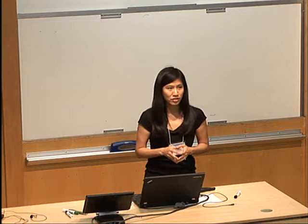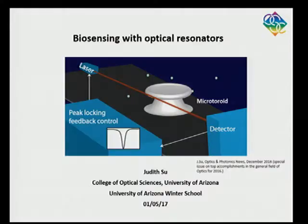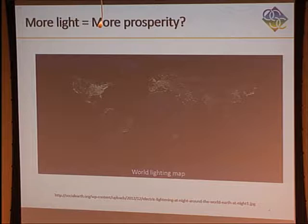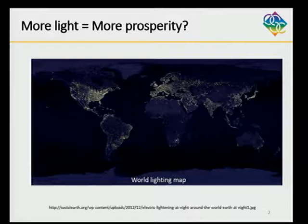I'm going to talk to you today about something very, very specific: detecting very, very low concentrations of molecules, down to the single molecule limit. I just wanted to start out with a picture I quite like — a picture of the world at night, an electric lighting map. You can see that more light correlates with more prosperity, so light is important for prosperity on a global scale, and it's also important for single molecule detection.